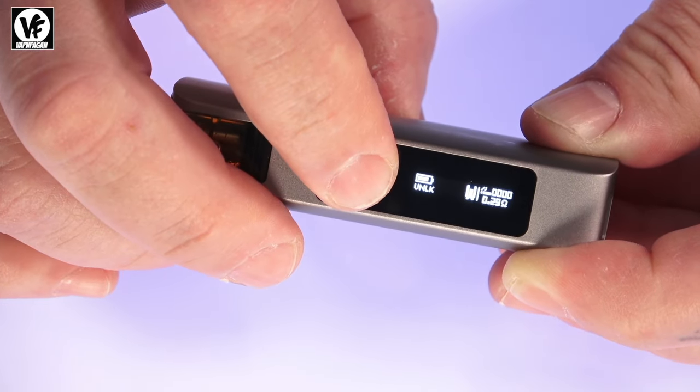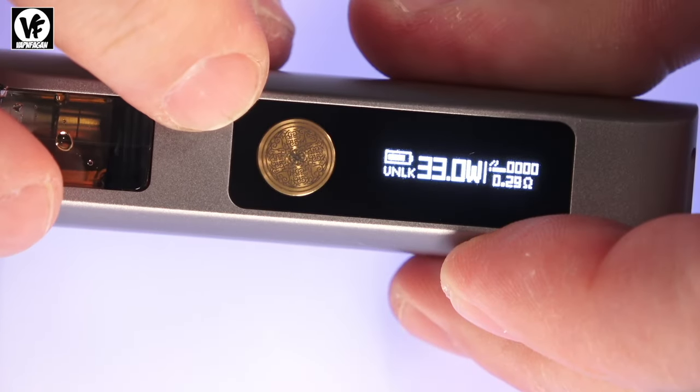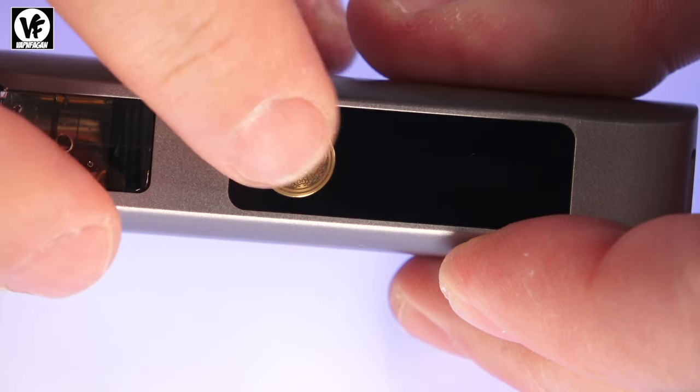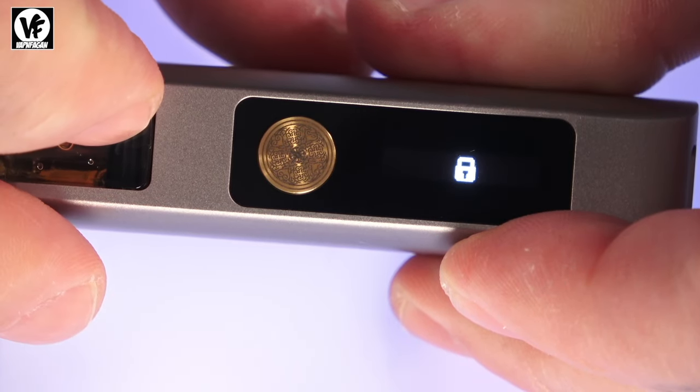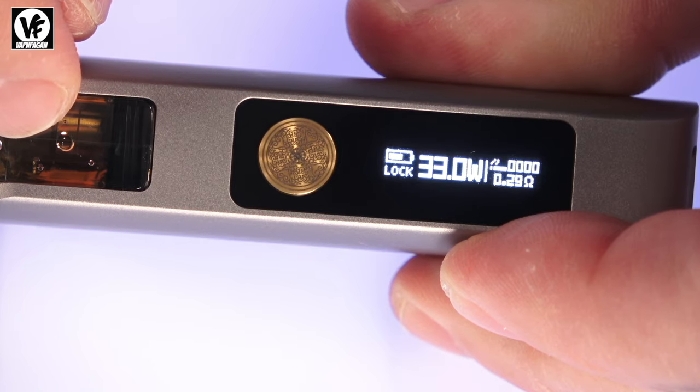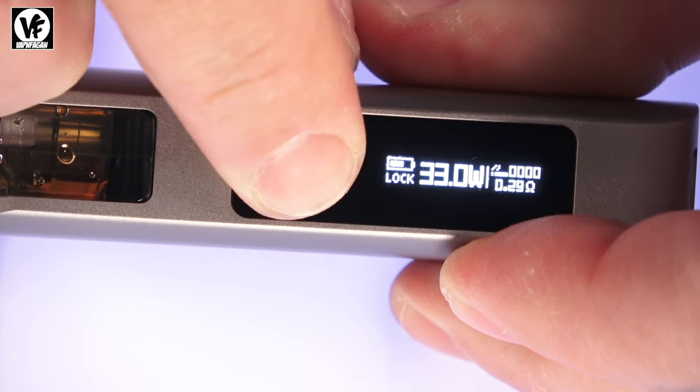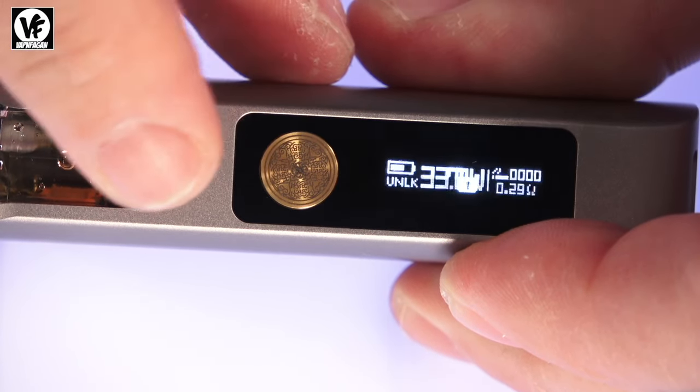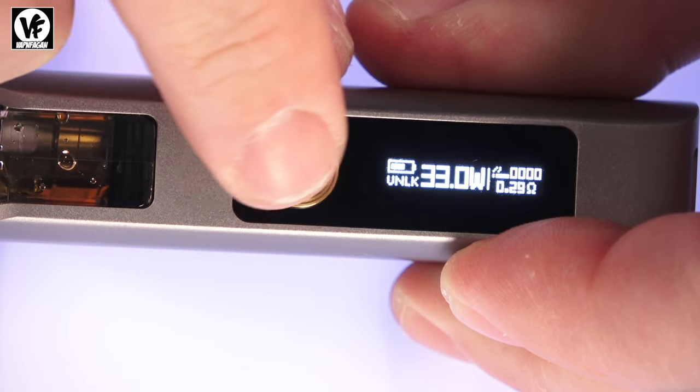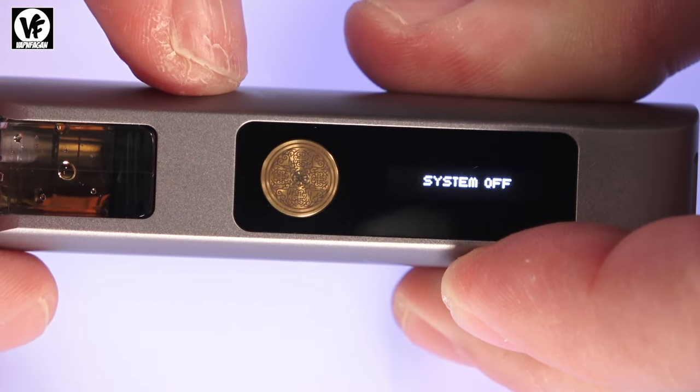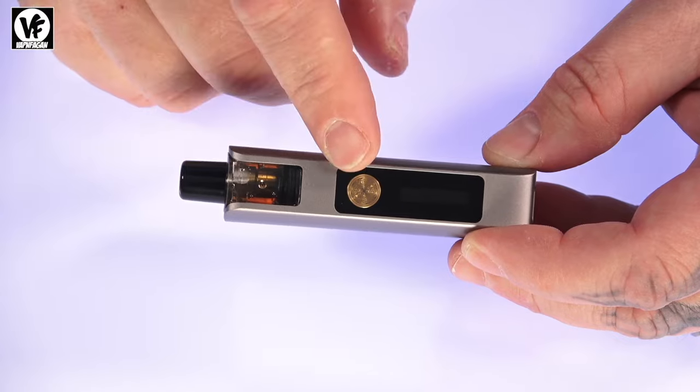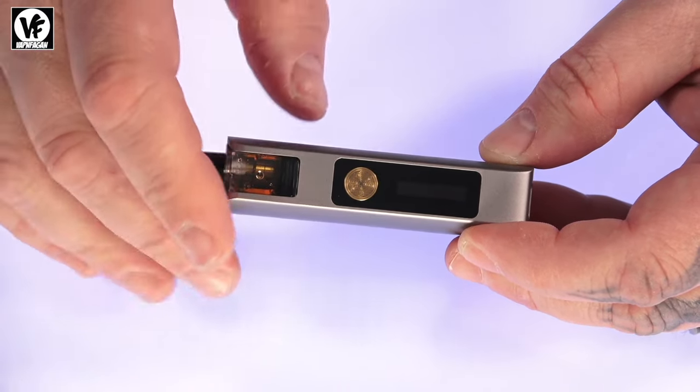A few other features - to lock the button, one, two, three, four, and that will lock the button. Now it becomes a straight auto draw device. One, two, three, four will obviously unlock it. And if you want to power it down, it will be five clicks - one, two, three, four, five. It's a very simple device, doesn't have any features or menu to it, just straight wattage mode.